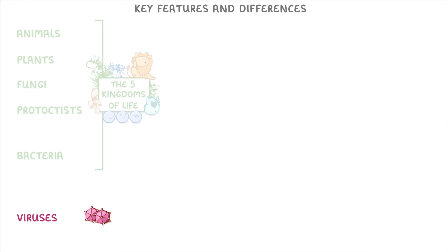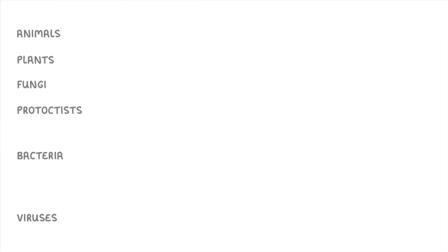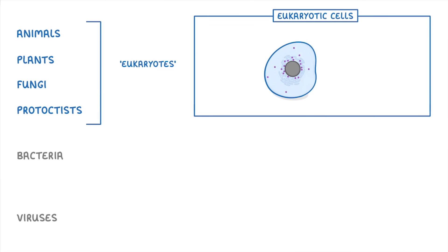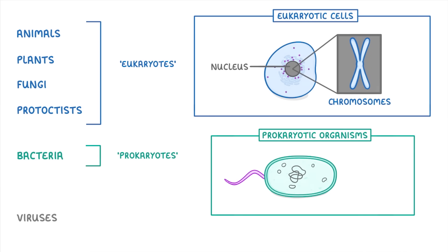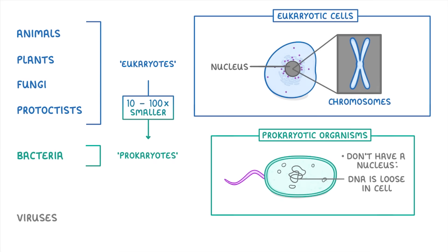Viruses are the odd one out, because as we'll see later, they're not actually living organisms, so aren't in any of the kingdoms of life. Before we go through each individually, animals, plants, fungi, and protoctists are all eukaryotes — eukaryotic organisms made up of eukaryotic cells. These have things in common, like their DNA being in the form of chromosomes and found in a nucleus. Bacteria, on the other hand, are prokaryotes — they don't have a nucleus, their DNA is just loose in the cell, and they're 10 to 100 times smaller than eukaryotic cells. Viruses don't count as organisms, so aren't classed as eukaryotic or prokaryotic, and are another 10 to 100 times smaller than prokaryotic cells.